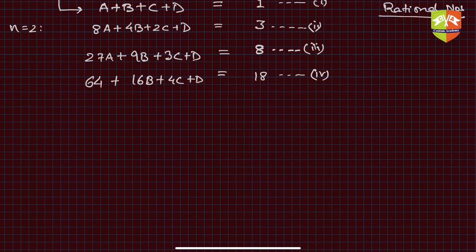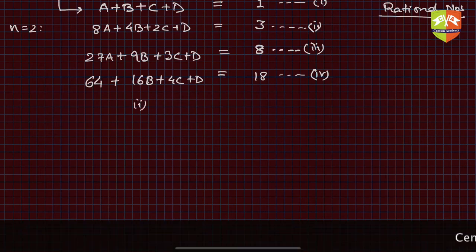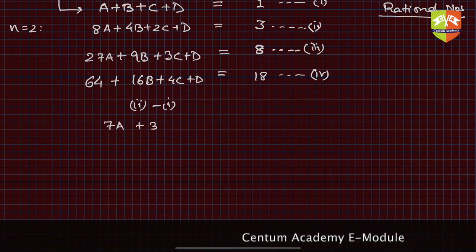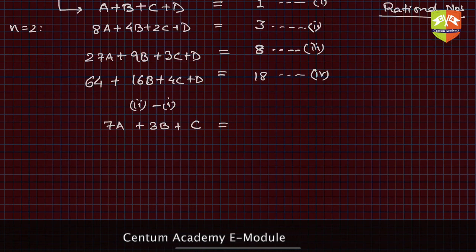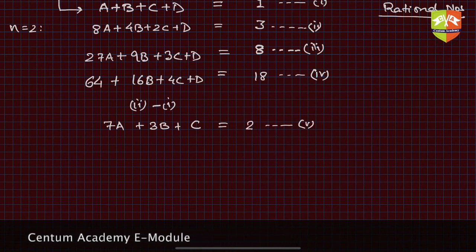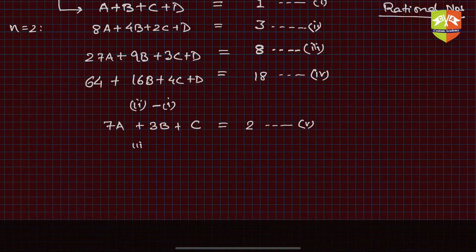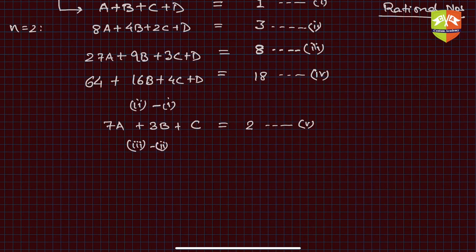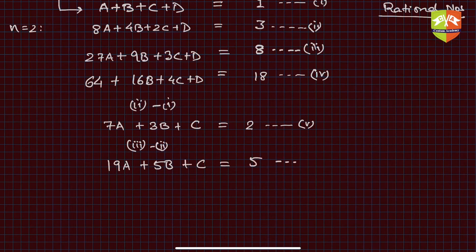We now have four equations and four unknowns a, b, c, d. Doing equation 2 minus equation 1 eliminates d: 7a + 3b + c = 2. Call this equation 5. Then equation 3 minus equation 2 gives: 19a + 5b + c = 5. Call this equation 6.